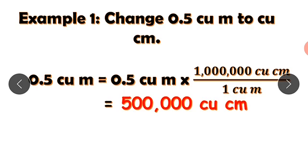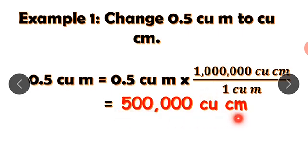Example one: change 0.5 cubic meters to cubic centimeters. We learned that one cubic meter equals one million cubic centimeters. So we multiply: 0.5 cubic meters times one million cubic centimeters per cubic meter, which gives us 500,000 cubic centimeters.